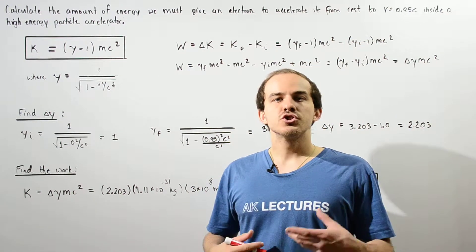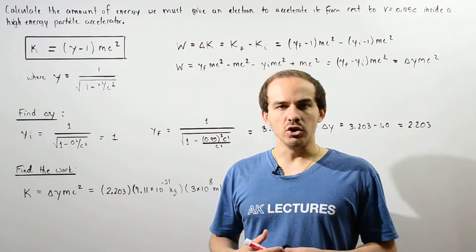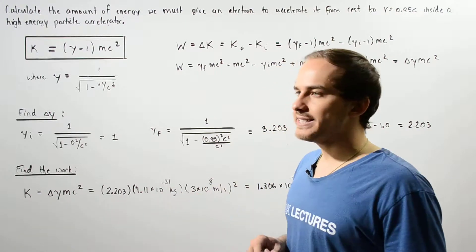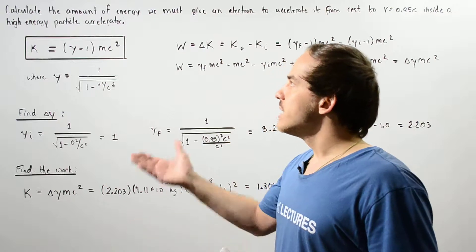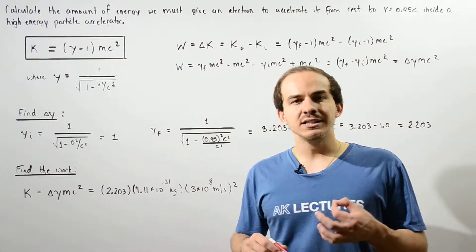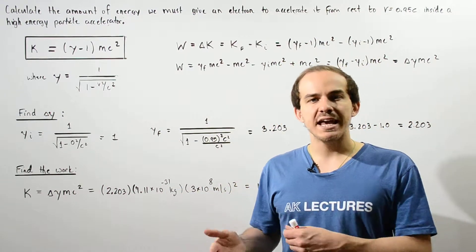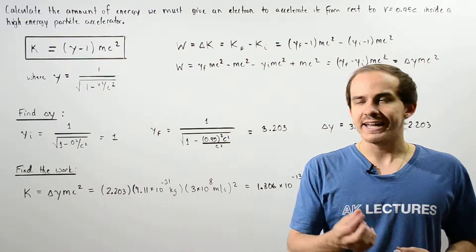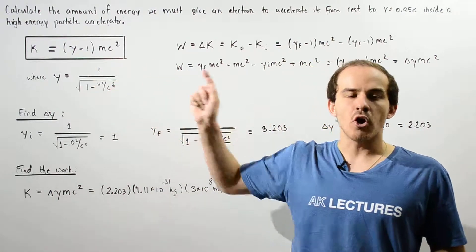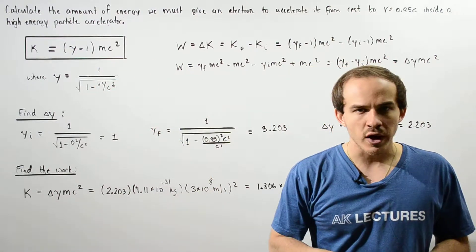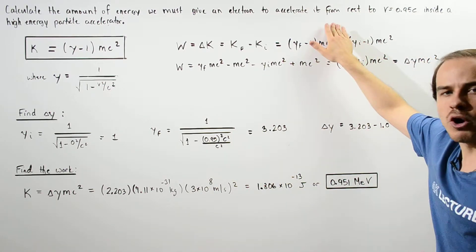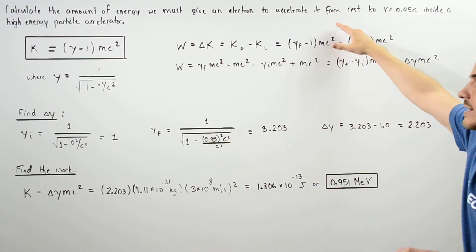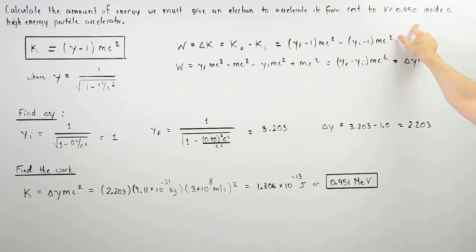Let's take a look at the following example that deals with high energy particle accelerators. Calculate the amount of energy that must be gained by a single electron inside a high energy particle accelerator to accelerate that particle from rest to a final velocity given by 95% of the speed of light in a vacuum.